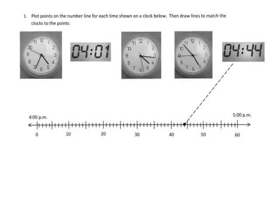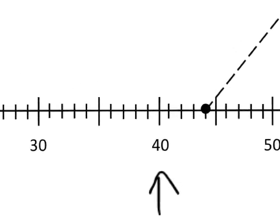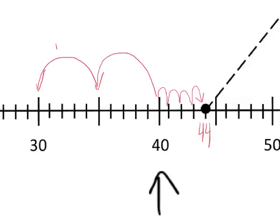So where 4:44 is — you can see here's 4 o'clock, and then here's 4:40, and then 4:44 means you have to go an additional 41, 42, 43, 44. So that is 4:44, because each of these intervals from here to here is 5 minutes: 30, 35, 40 — and then we switch over. Instead of counting by intervals of 5, now we're going to count over intervals of 1: 41, 42, 43, 44, and that's how we get that.